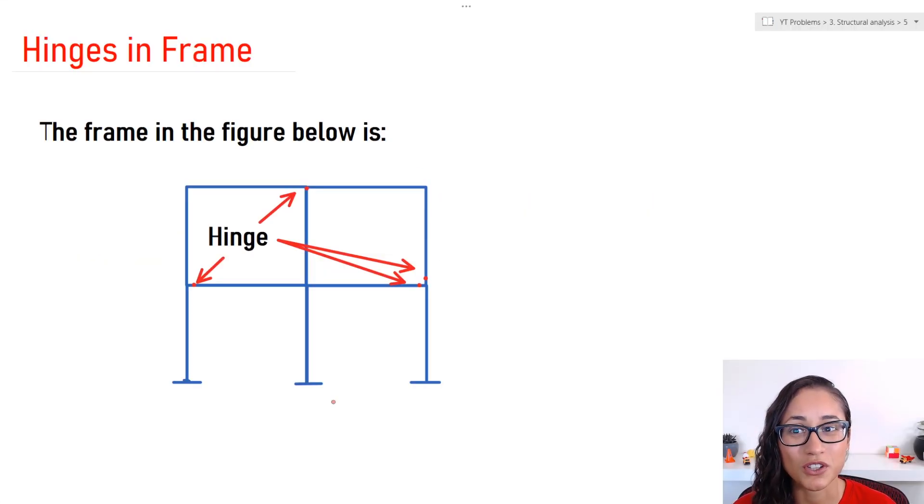So a couple weeks ago, I posted a video on this problem and I determined if the frame is stable and statically determinate or indeterminate. Now a lot of you has asked me to clarify how I calculated how many hinges we have in this frame. So that's what I'm going to go over here. Now if you want to watch the whole problem, I will leave the link above in case you want to check it out.